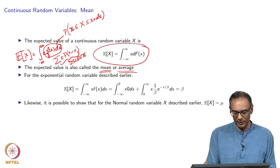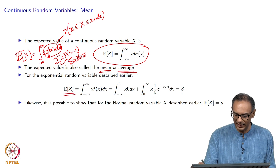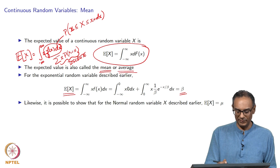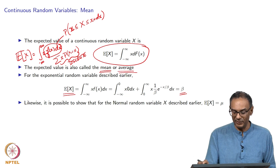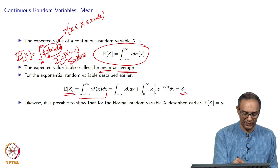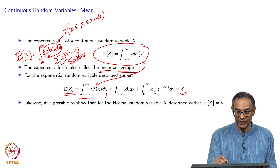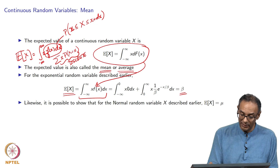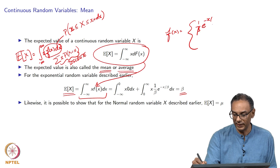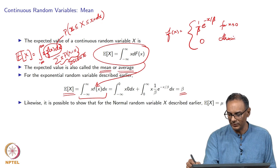We saw the exponential random variable earlier and said the expected value of the exponential random variable is beta. We picked the exponential random variable with parameter beta where beta was the mean. We are essentially going to derive that. Based on the result above, by definition, the expected value is the integral from negative infinity to infinity of x times little f of x times dx. For the exponential distribution, little f of x is (1/beta) * e^(-x/beta) for x >= 0, and 0 otherwise.